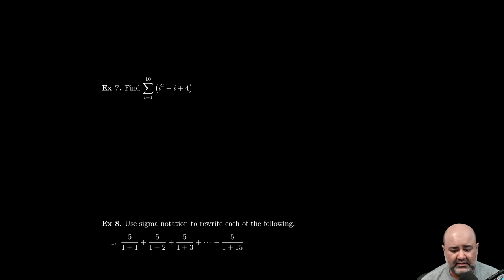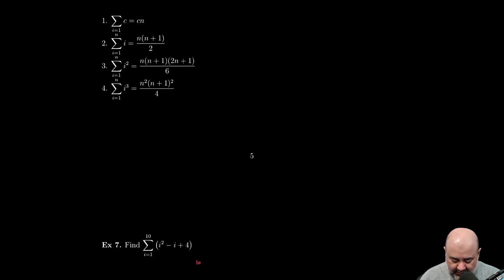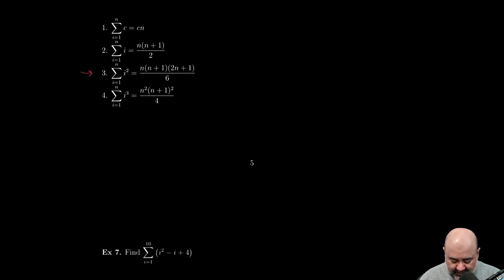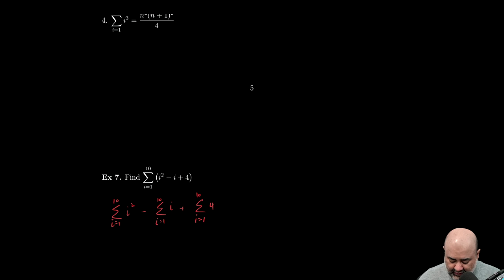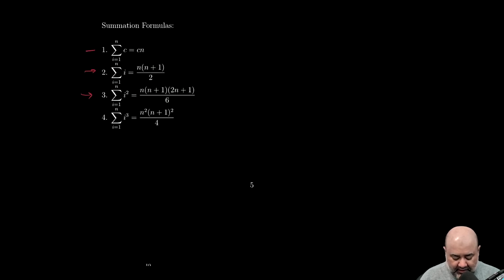Let's find this summation. Because my upper limit is finite I can break this down into three separate sums using the sum and difference rule. This is the sum of i² minus the summation from i equals 1 to 10 of i plus the summation from i equals 1 to 10 of 4. For i² I can use formula three, for i I can use formula two, and for the constant 4 I can use the first formula.